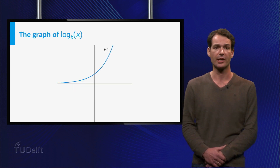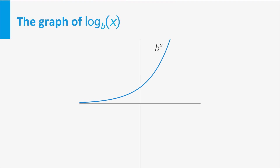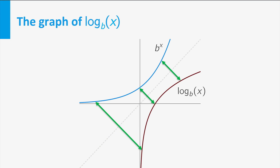Let's go back to the general function log base b of x. Since this is the inverse of the exponential function b to the power x, the graph of log base b of x is the reflection of the graph of b to the power x in the line y equals x. Note that the logarithm goes to minus infinity as x tends to zero.